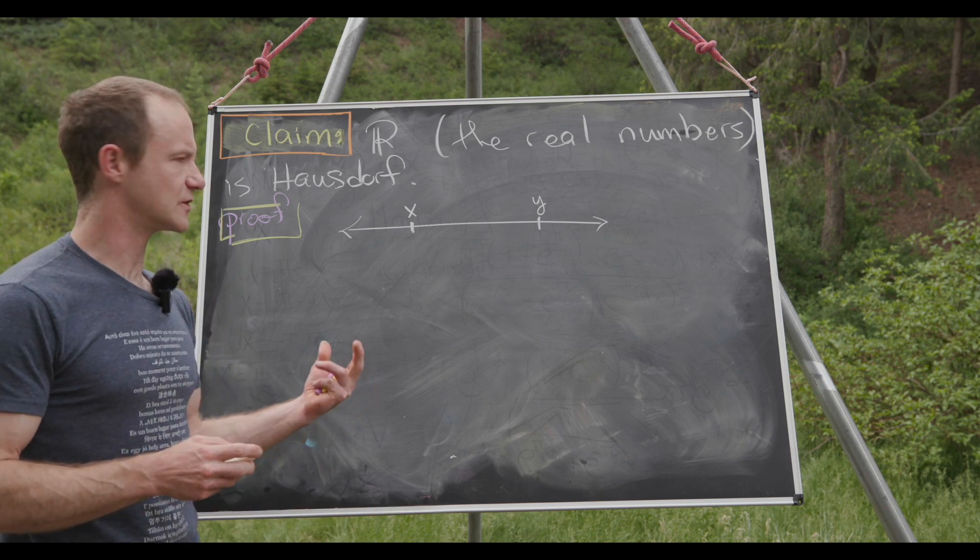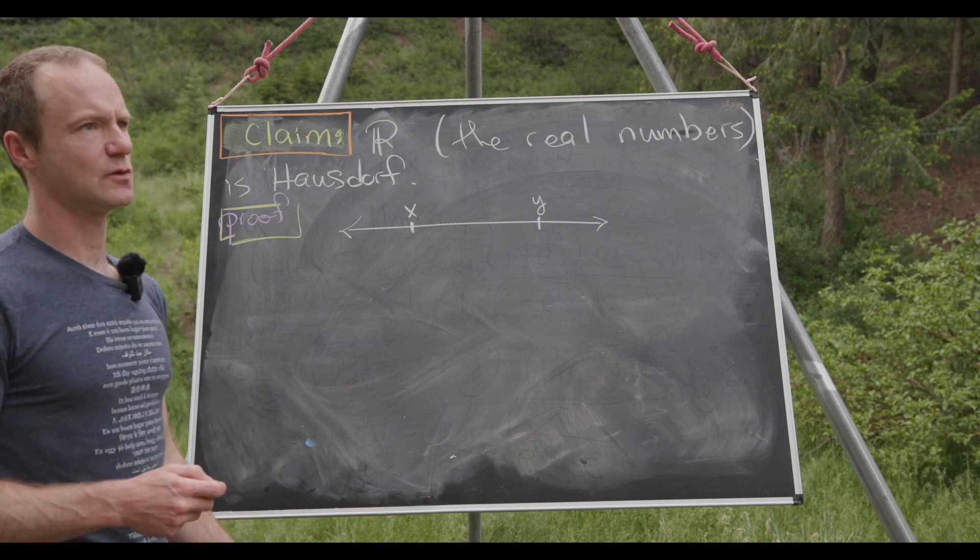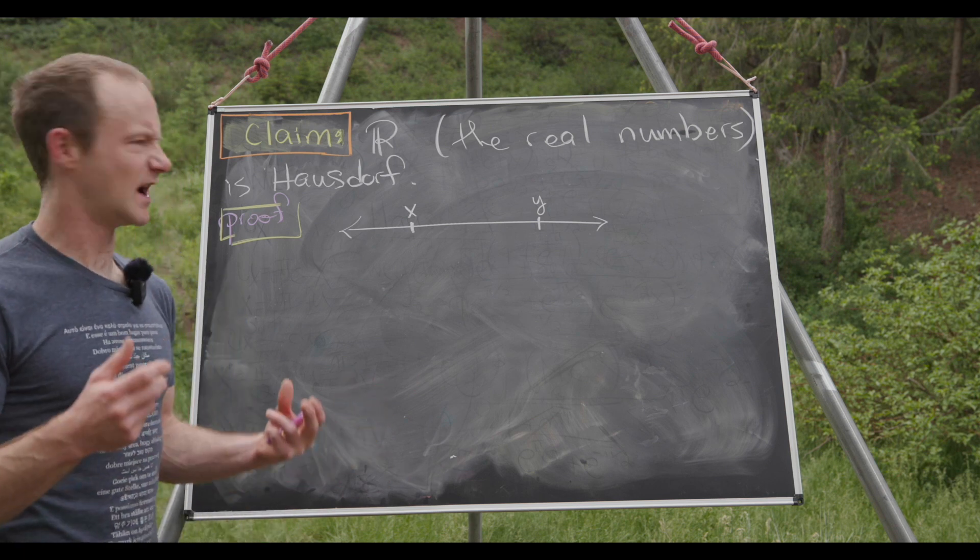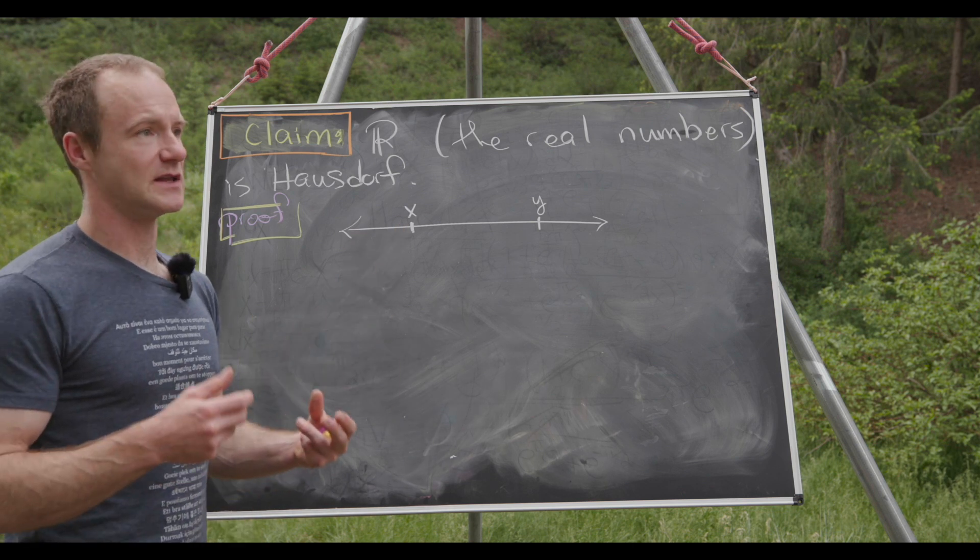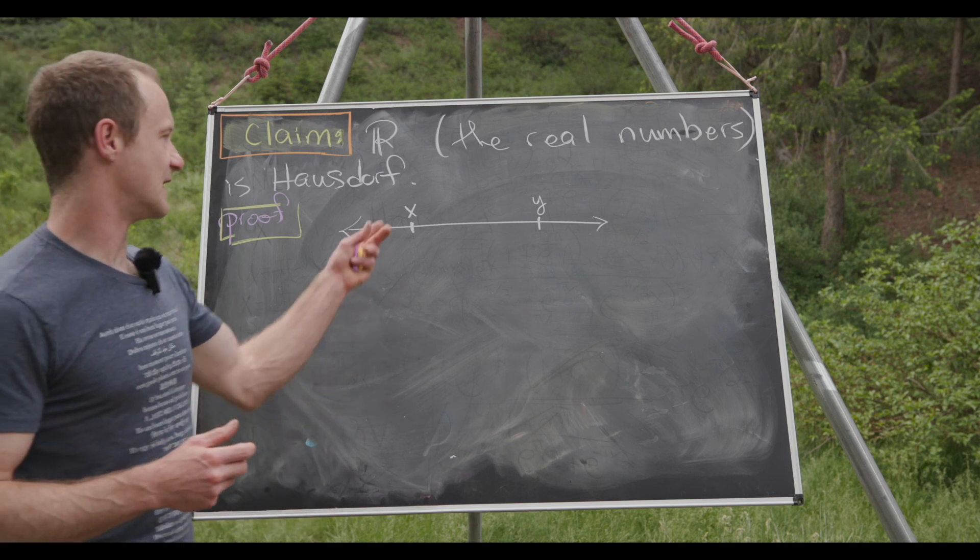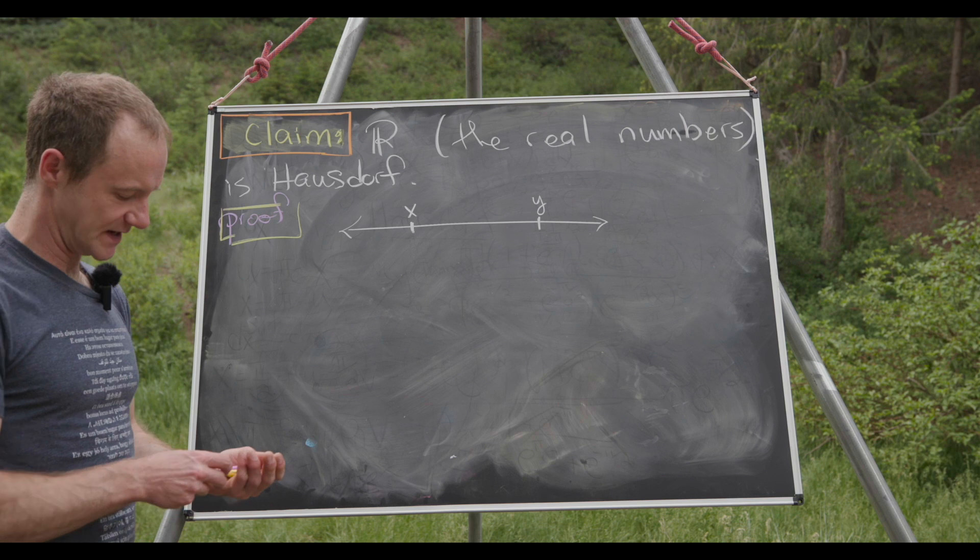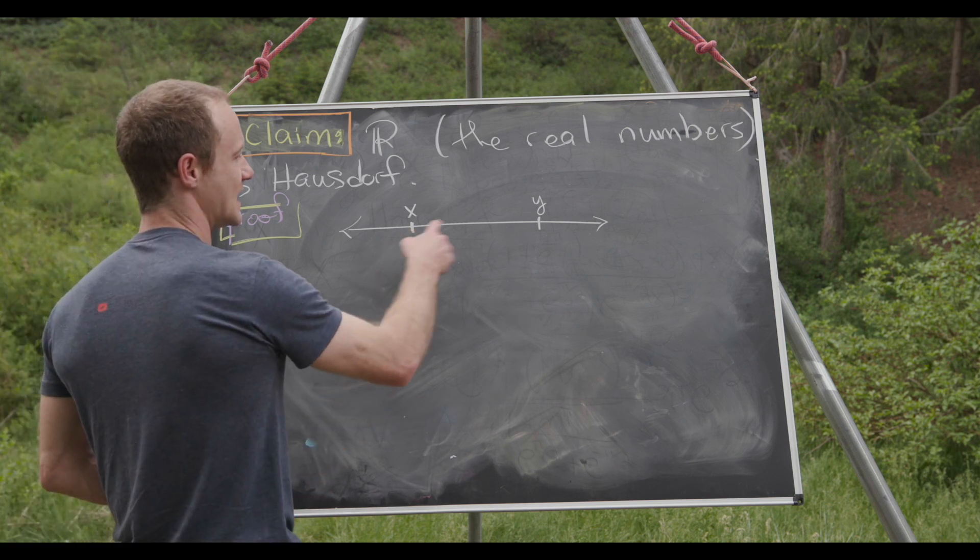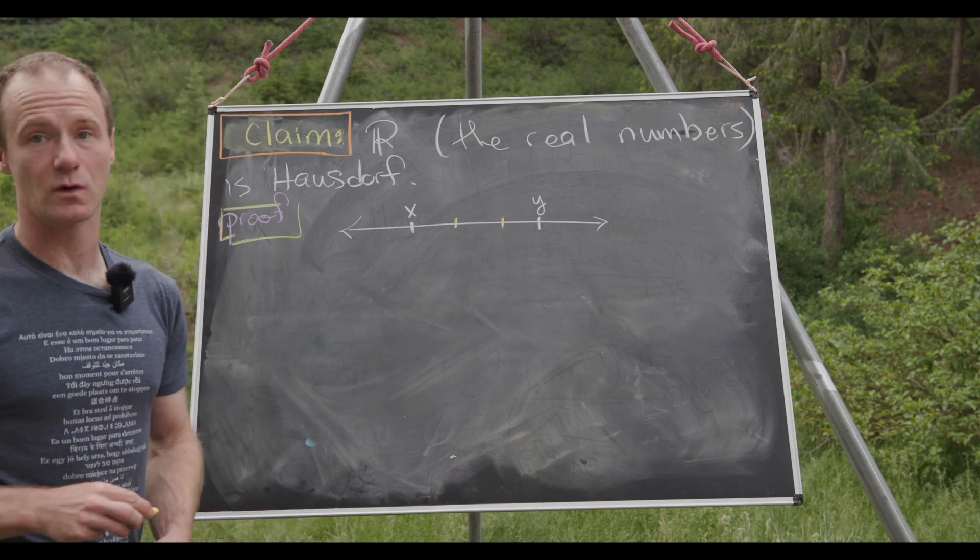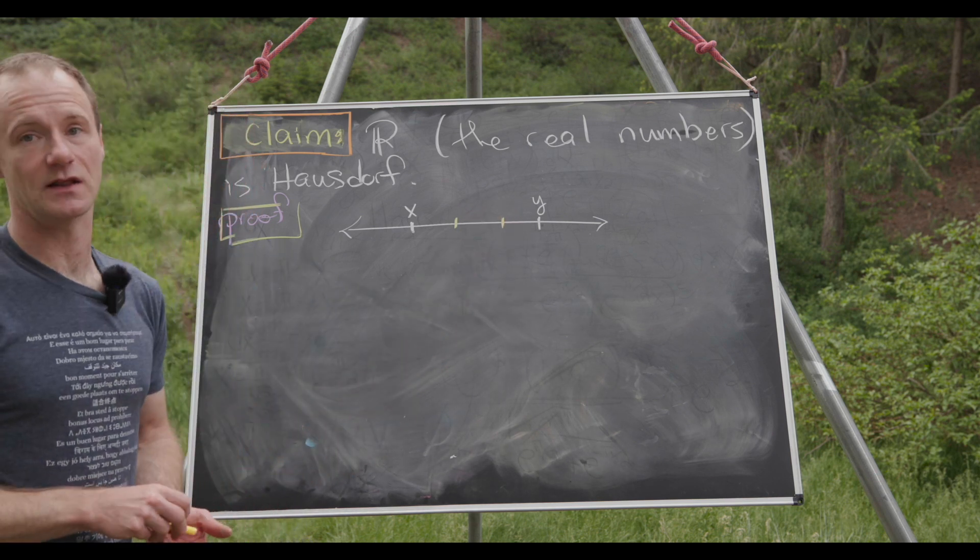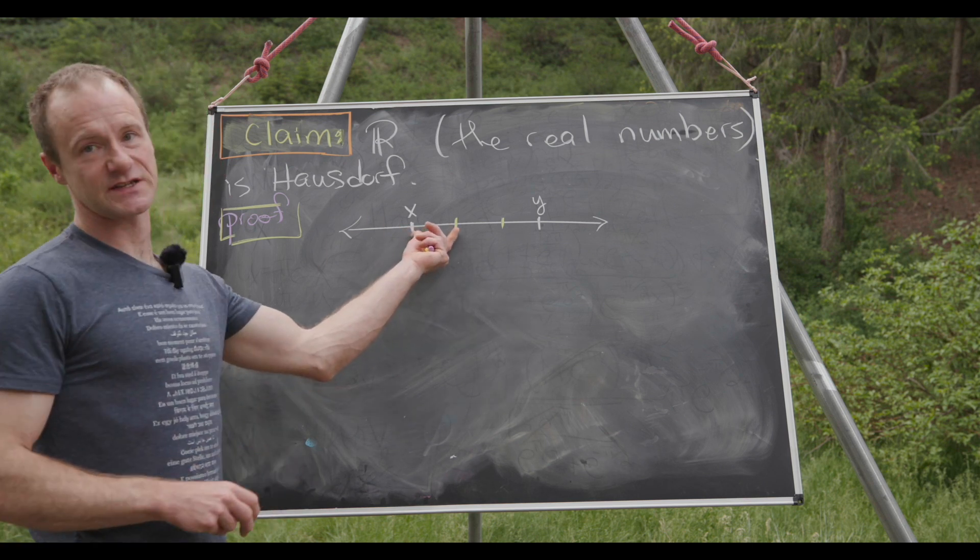But what are open sets in the real numbers? Well, they are exactly intervals. And so we'd like to do this so it works for all x and y. We'd probably like to construct these intervals so that they depend on x and y. And I would say maybe the best way to do it is to divide up this distance between x and y into three pieces that are equal in length. And then we can build our interval with this radius.